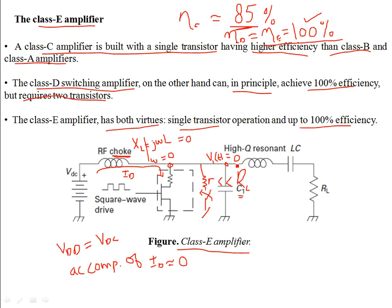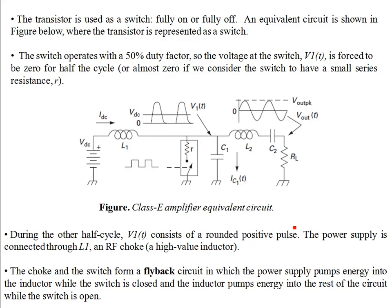When the switch is closed, the supply pumps energy into the RF choke. When the switch opens, the energy stored in the choke is supplied to the rest of the circuit — the LCR circuit. The transistor is used as a switch in the saturation region, either fully on or fully off. It operates with a 50% duty factor. The voltage V1 at the switch is forced to be 0 for a half cycle, considering the switch has a very small on-resistance.